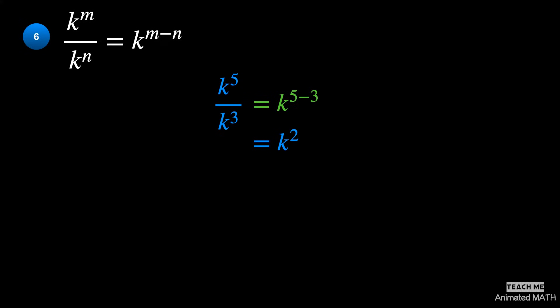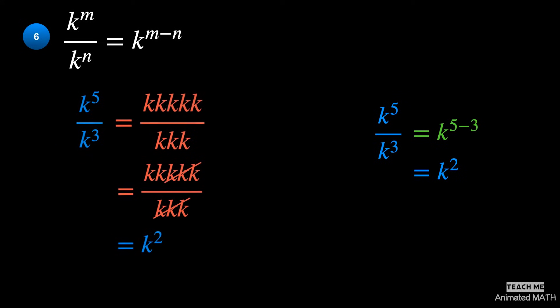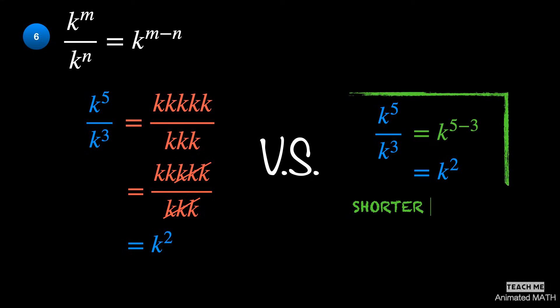Using the sixth property, you can write it as k raised to the power of 5 minus 3, or k squared.